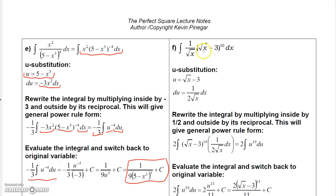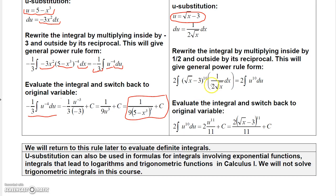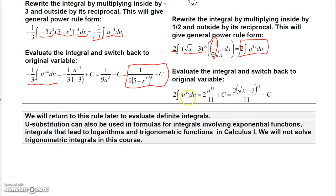This one: I have 1 over square root of x times the square root of x minus 3 to the 10th power. Since this is raised to the 10th power, let u equal square root of x minus 3. If you take the derivative, you get 1 over 2 square root of x, so du would be 1 over 2 square root of x dx. Here I have 1 over square root of x and dx, so what I need is a half. I multiply the inside by a half and the outside by 2. Then this is u to the 10th, and all of this is du. So I have 2 times the integral of u to the 10th du. Applying the power rule gives 2u to the 11th over 11, plus a constant, and then replace u with square root of x minus 3.